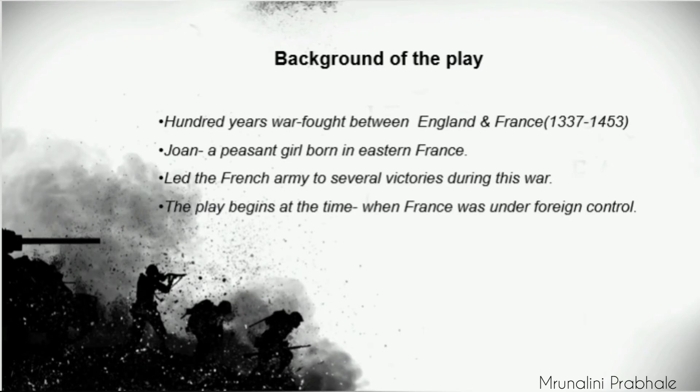Look at the next slide - background of the play. The war fought between England and France from 1337 to 1453 has come to be known as the Hundred Years' War. Joan was a peasant girl born in eastern France who led the French army to several victories during this war. This play begins at the time when all of northern France and some parts of the southwest were under foreign control - the English controlled some parts and the Burgundians controlled the others.